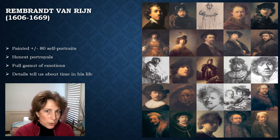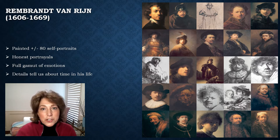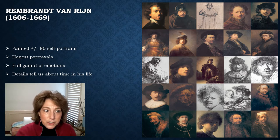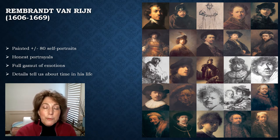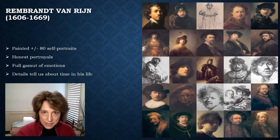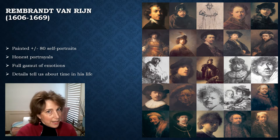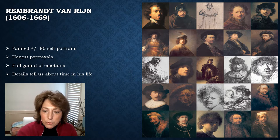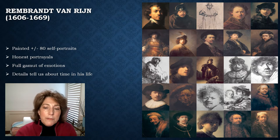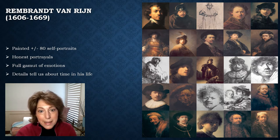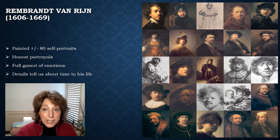Next we're going to talk about a really famous portraitist: Rembrandt van Rijn — most of us just call him Rembrandt. He lived from 1606 to 1669. Even today, Rembrandt is considered one of the foremost and most studied portraitists ever. He did about 80 different self-portraits, probably because he was his own best model — available whenever he wanted to paint, capturing himself at various stages of life.